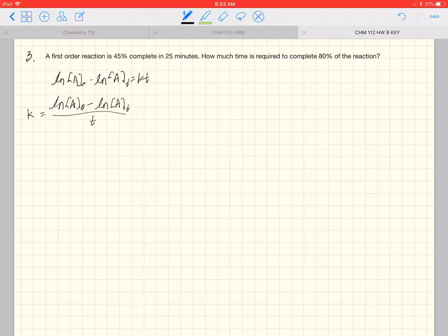And we can plug in values here. Now, if something's 45% complete, first of all, the initial amount is going to be 100%. The amount that reacts is 45%. So 100 minus 45 is the amount that remains. So that's 55.